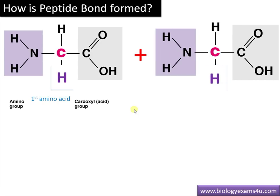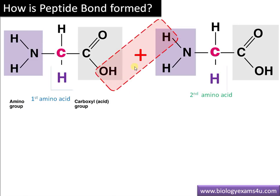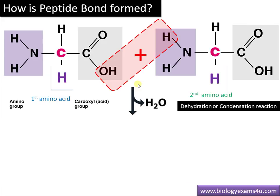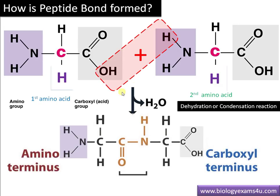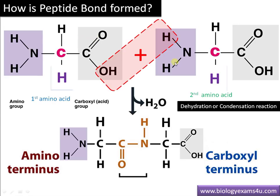Now we have the first amino acid. The second amino acid — let's also take it as glycine. Let's see how this bond is formed. A water molecule (H2O) is removed. Therefore the synthesis is called dehydration synthesis or condensation reaction, where the bond is formed with the release of a water molecule. This is the peptide bond: C=O — NH.